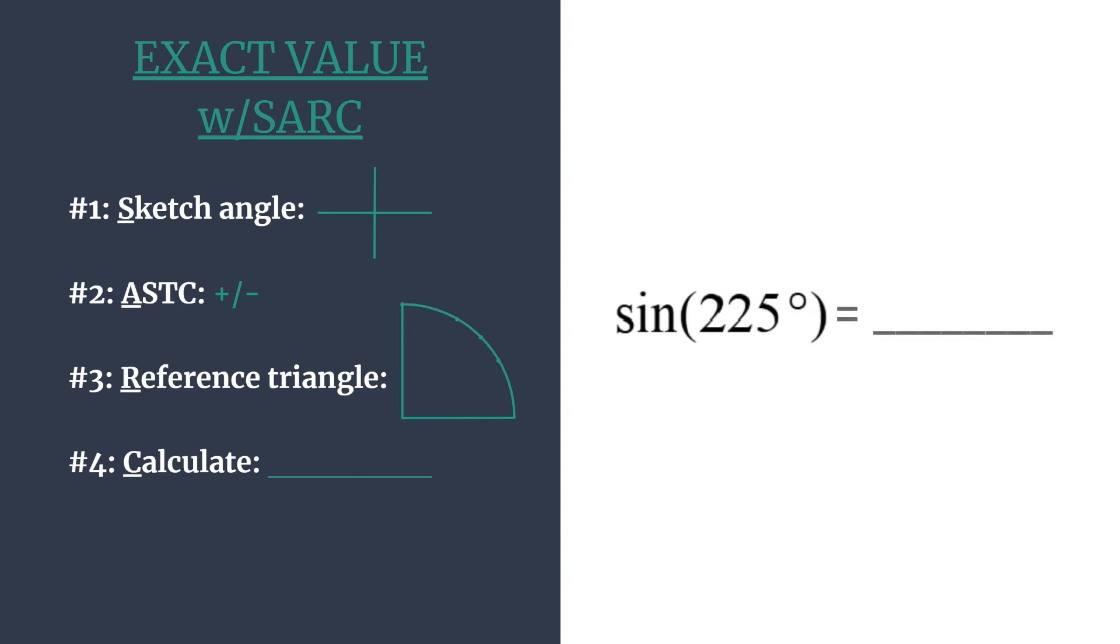Now we'll find the sine of 225 degrees. We first want to start by sketching the terminal side of this angle. So we start here at zero. We have 90 degrees of rotation, 180 degrees, 270, and then a full rotation is 360. Ours falls exactly halfway between 180 and 270. So here is the terminal side of 225 degrees.